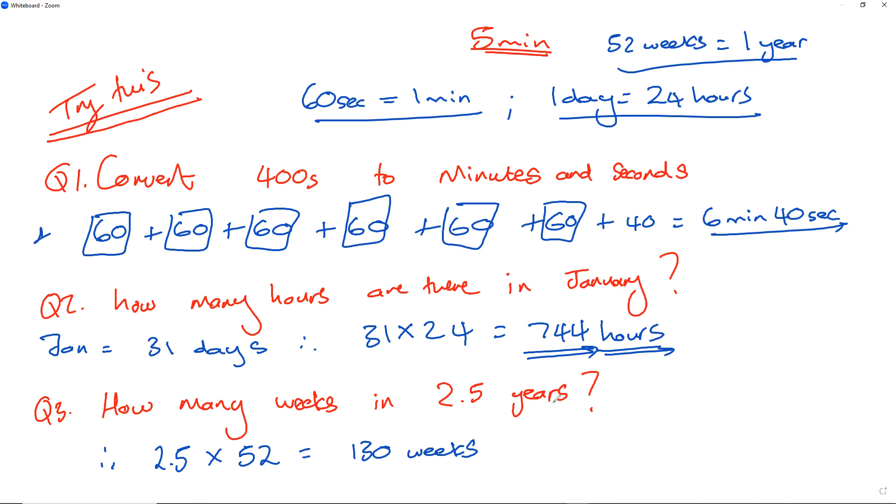How does this also make sense if I write it like this? I've got 52 weeks for 1 year, 52 weeks for 2 years, and then a half a year plus 26. So it's 104 plus 26, which is 130.